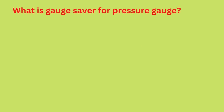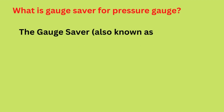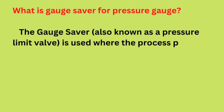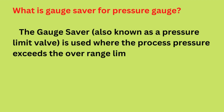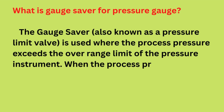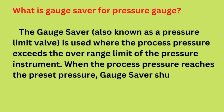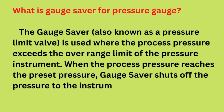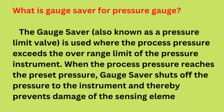What is a gauge saver for a pressure gauge? The gauge saver, also known as a pressure limit valve, is used where the process pressure exceeds the overrange limit of the pressure instrument. When the process pressure reaches the preset pressure, the gauge saver shuts off the pressure to the instrument and thereby prevents damage to the sensing element.